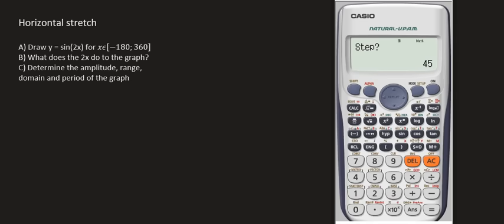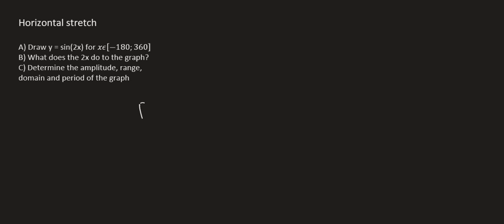We know that the period of a normal sin graph under usual conditions is 360. But now this 2x over here, we need to know what that does to the graph.